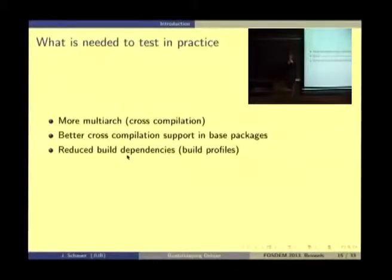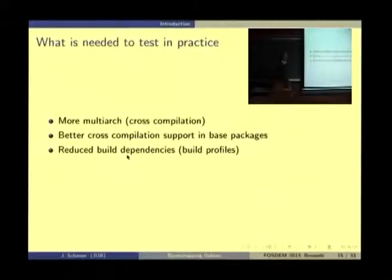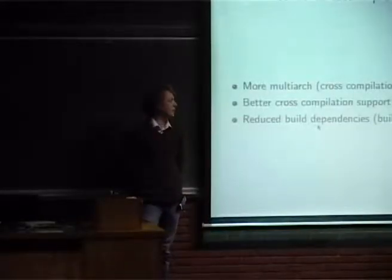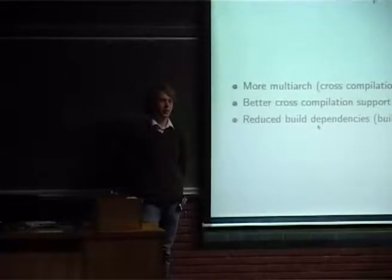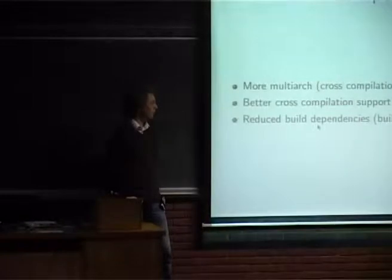To test all this in practice, more things are needed. First, more multi-arch support is required so we can analyze the cross phase, which is not possible yet due to some multi-arch conflicts. Some packages need to be made better at cross-compilation for the minimal build system. And there needs to be a way to write down in source package metadata which build dependencies can potentially be dropped during the bootstrapping phase. The syntax for that is still being debated, but a final decision is needed.